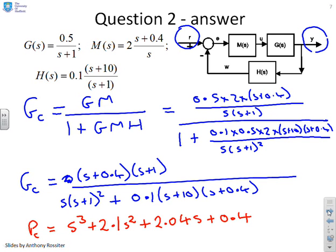Now we were asked: are the poles in the left half plane or not? If you look at the videos on roots and polynomials and establishing whether the roots are all in the left half plane, the criteria was to multiply together these two middle coefficients: 2.1 times 2.04, and check is that greater than 0.4? The answer is yes, and therefore all your poles are in the left half plane.